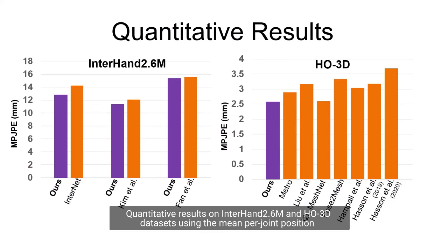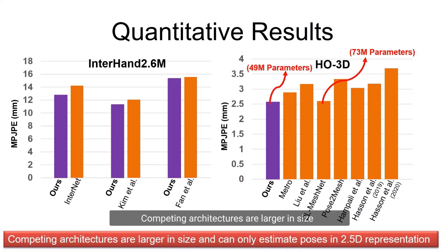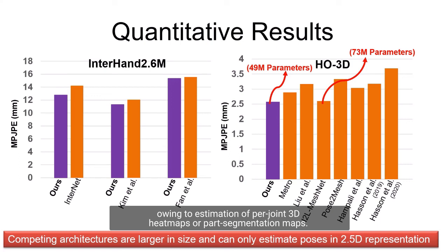Quantitative results on InterHand2.6M and HO-3D datasets using the mean per-joint position error show that our method outperforms previous methods by a large margin. Competing architectures are larger in size owing to estimation of per-joint 3D heatmaps or part segmentation maps.